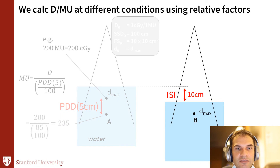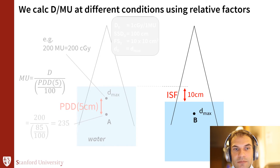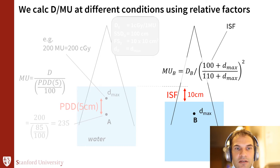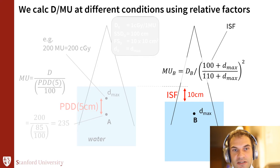A different scenario is if you want to move the phantom down — keeping the depth the same, still at D-max, but now using SSD 110. For that, you need to change the inverse square factor, going from SSD 100 to SSD 110.